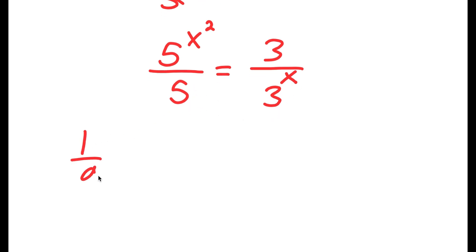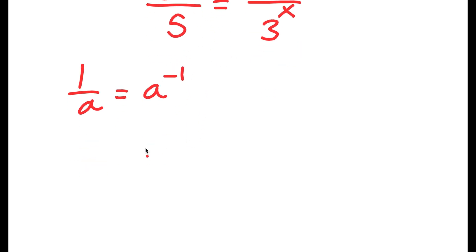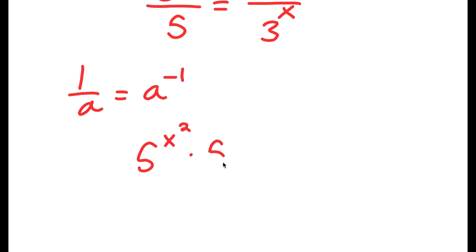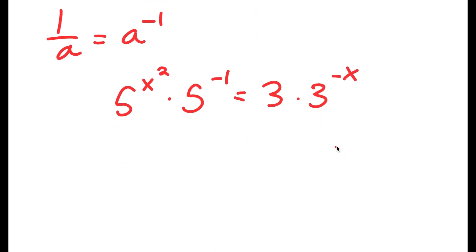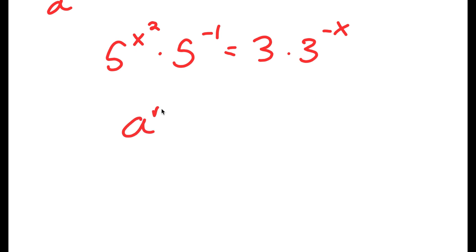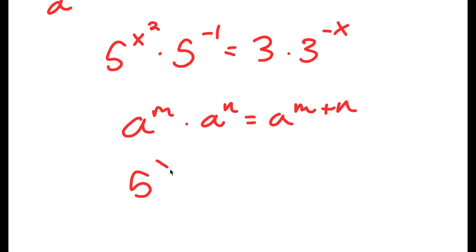Since 1 over a is the same as a to the power of negative 1, I have 5 to the power of x squared times 5 to the power of negative 1, which equals 3 times 3 to the power of negative x. Using the rule a to the power of m times a to the power of n equals a to the power of m plus n, I get 5 to the power of x squared minus 1 is equal to 3 to the power of 1 minus x.